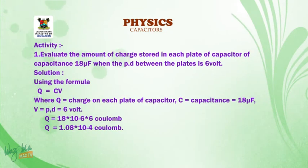Work example under our activities. Evaluate the amount of charge stored in each plate of capacitor in 18 microfarad when the potential difference between the plate is 6 volts. Solution: You will use the formula Q is equal to CV, where Q is charge on each plate of the capacitor, C capacitance, which is equal to 18 microfarad, and V, which is equal to your PD, which is equal to 6 volts. Therefore, your Q will now be CV, which is 18 times 10 raised to negative 6 times 6.